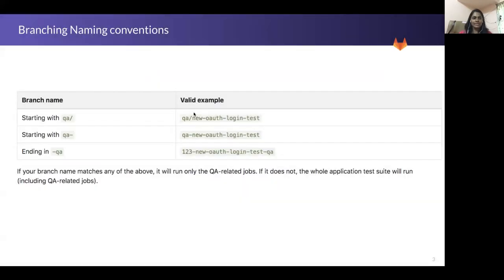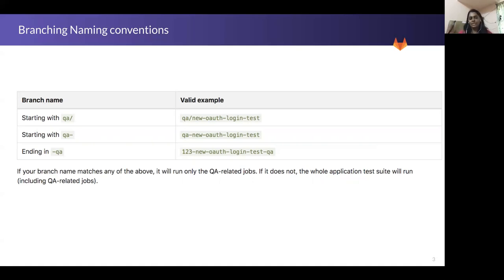Moving on to the next slide — this is about how to name your branch. It actually matters how you name your branch, because if the name starts with QA or ends with QA, then we have a different workflow defined for the entire CI pipeline. This workflow skips a few jobs which are not relevant for the test code, and there is one more job which is run as mandatory for these QA tests. It is always good to follow these naming conventions so that your CI pipelines are quicker and you can get quicker feedback.